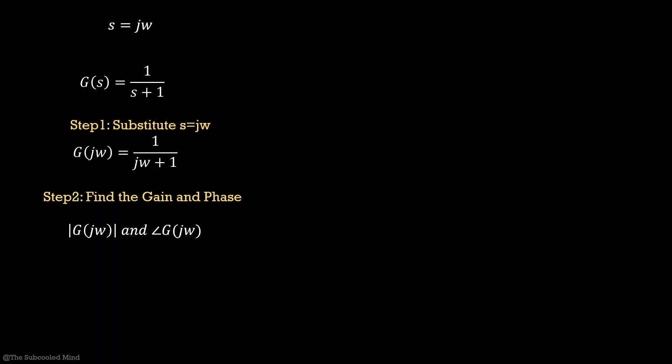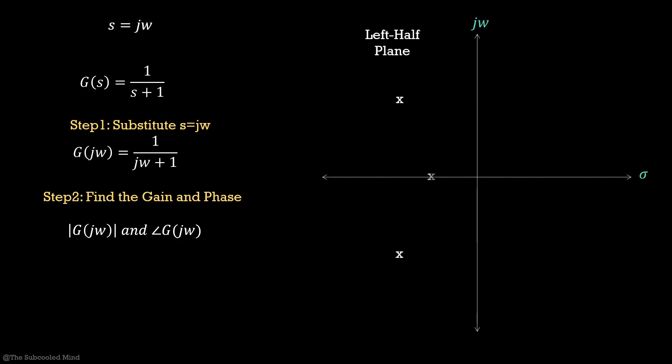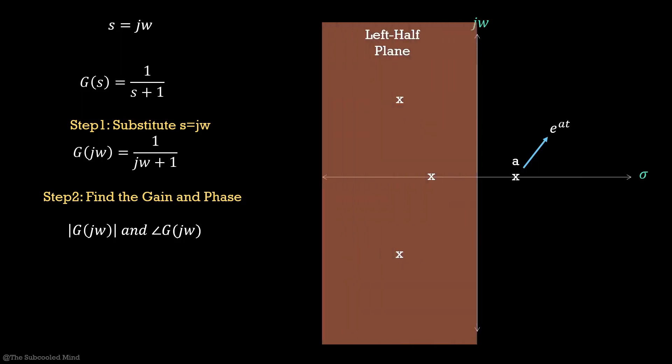But before we do that, let us see why we substitute s equal to jω and not include the sigma term. In real life systems, you may always see damped oscillations, and that means sigma, the damping factor, is negative and the poles would lie in the left half plane. If we had a positive damping factor, the function would blow up to infinity since it's a growing exponential and this would be an unstable system. So sigma only damps the amplitude of the signal and does not change its frequency. Therefore, when we want to understand the frequency response of a system, we are not really concerned with the damping factor as long as it lies in the left half plane. Hence, we substitute sigma equal to 0, or s equal to jω, in the transfer function.